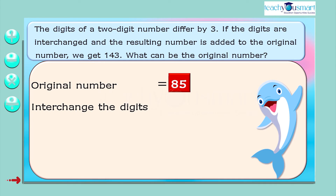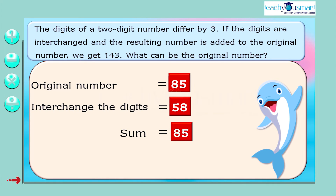If we interchange the digits, we get the number 58, and the sum is 85 plus 58 equals 143, as given.